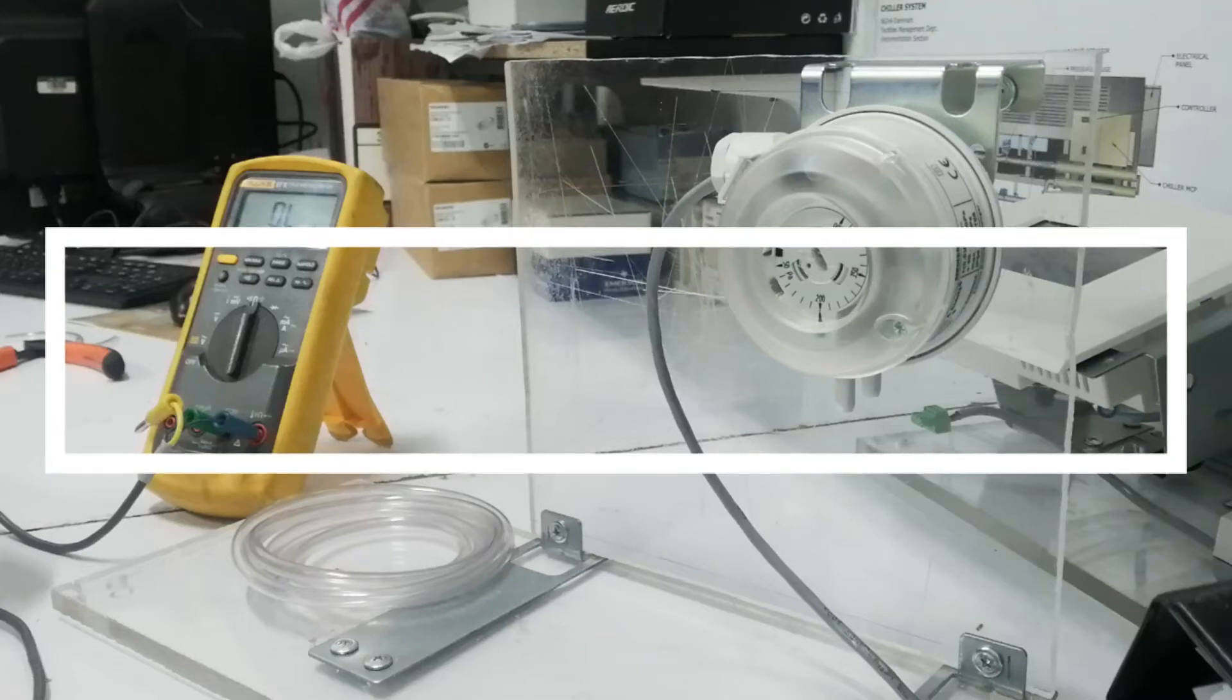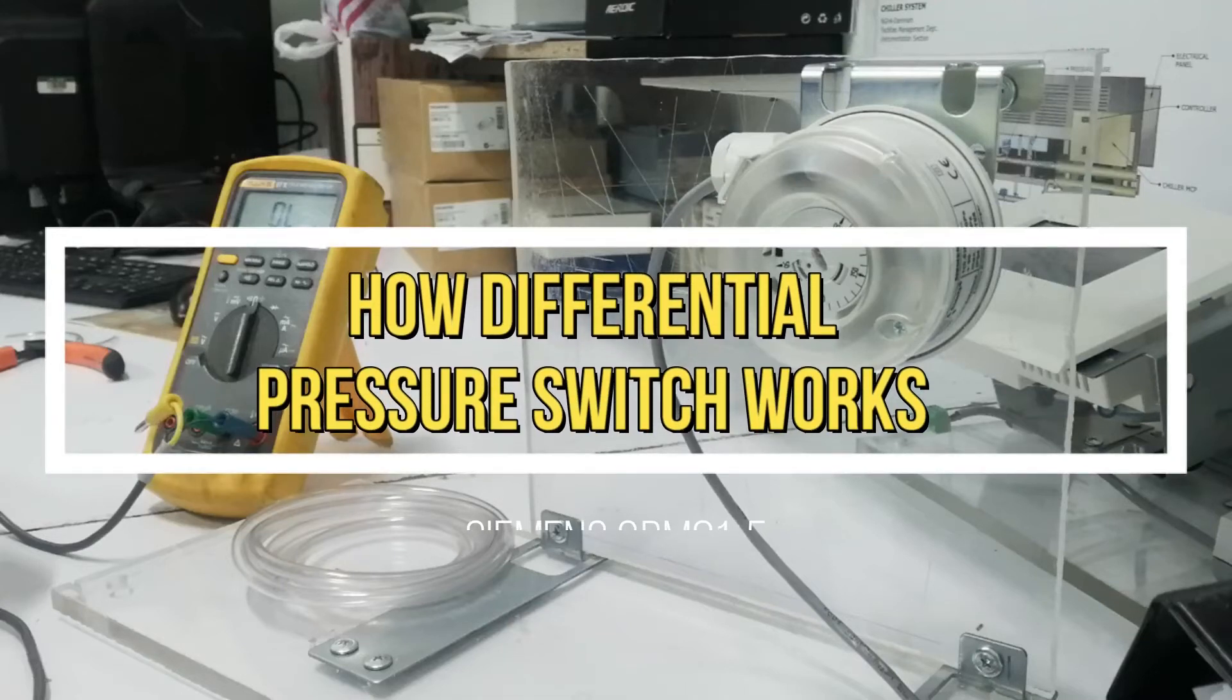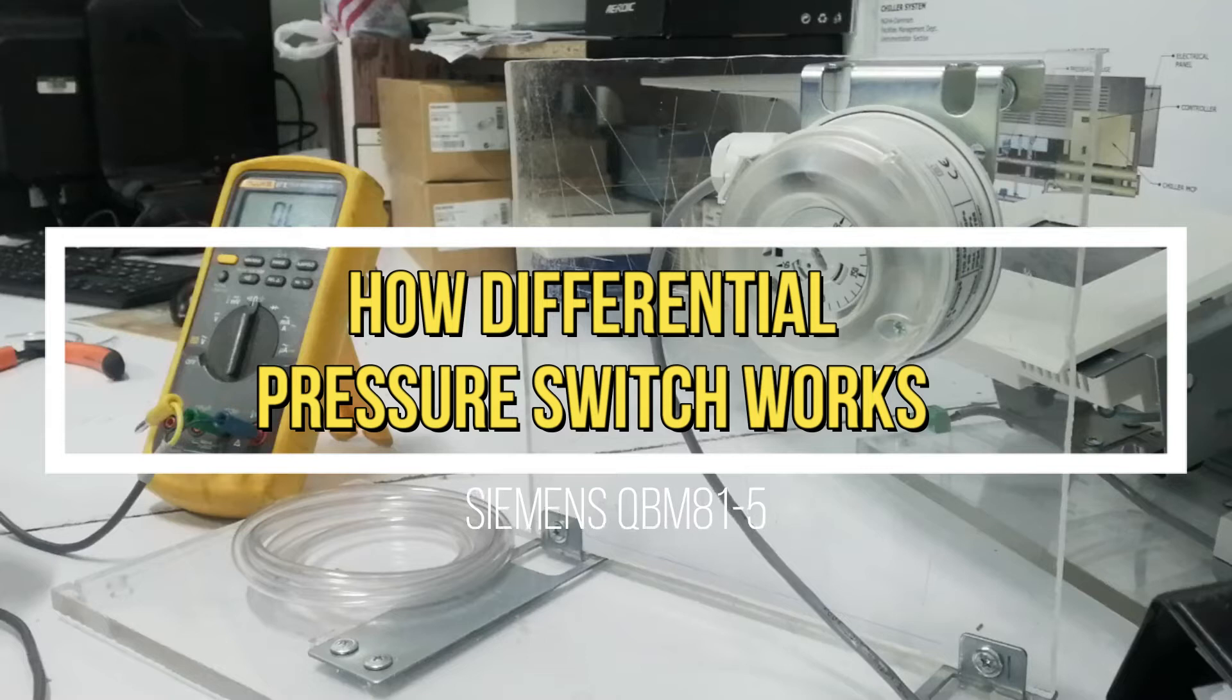How differential pressure switch works. A differential pressure switch is a device which utilizes a differential air pressure to actuate an electric switch at a preset actuation point.